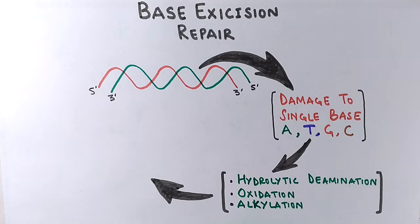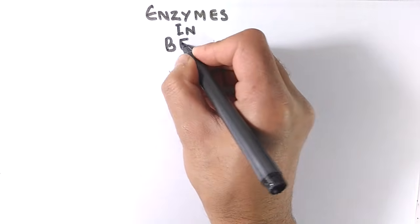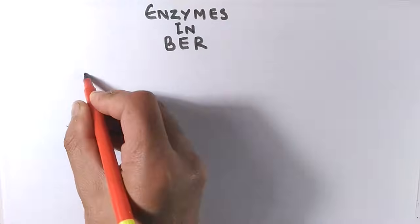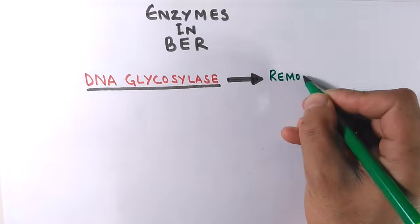Let's have a look at the enzymes that drive base excision repair. First, we have DNA glycosylase—it recognizes the lesion and removes the damaged base from the strand.